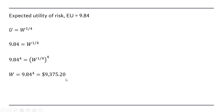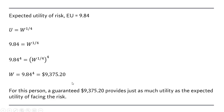So that is the certainty equivalent. For this person, a guaranteed $9,375.20 provides just as much utility as the expected utility of facing the risk. Plugging this $9,375.20 into the utility function, u will equal 9.84, which is the same as the expected utility of the risk.